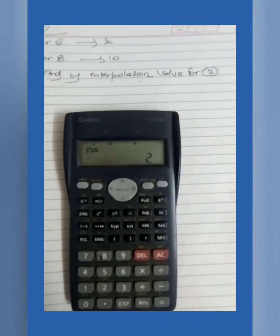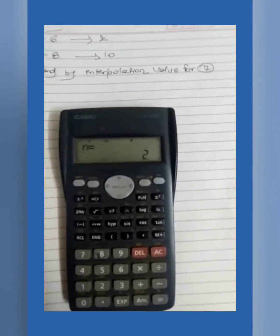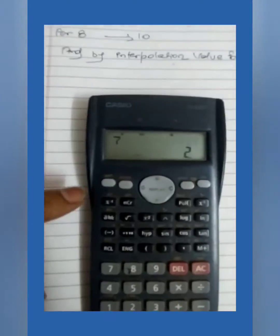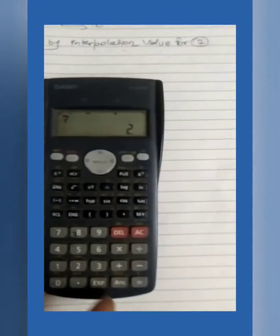And then we will press M plus. We want to get result for 7, so we will press 7, then we will press shift, then we will press 2.